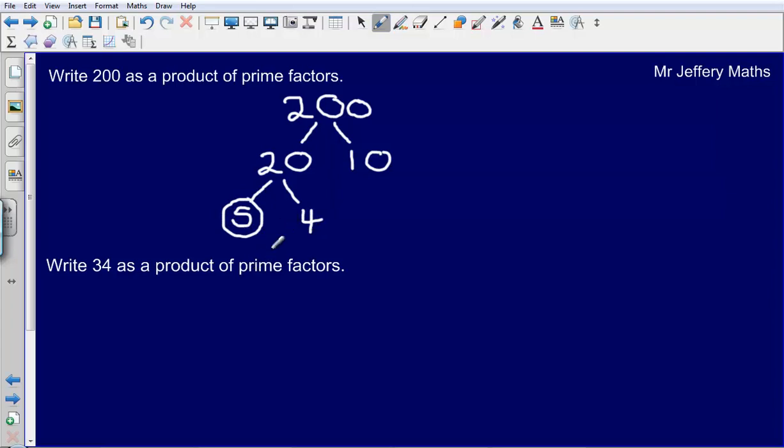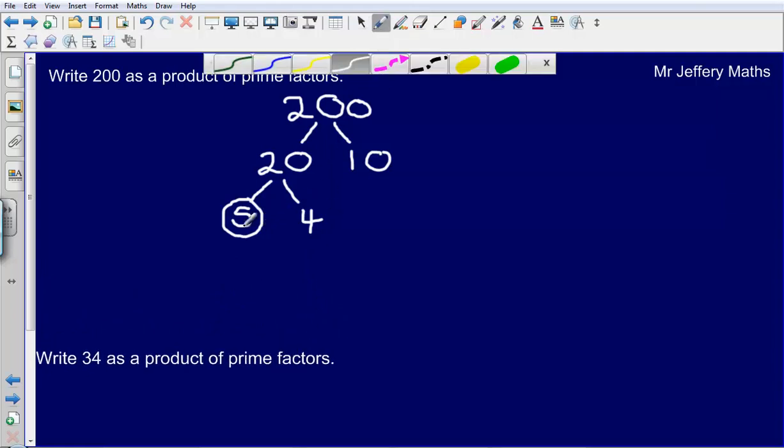I've just circled that 5 there because it is a prime number. I'm just going to move this down quickly to give myself a bit more space. So I've circled that because it is a prime number.